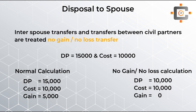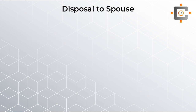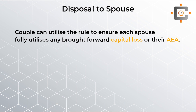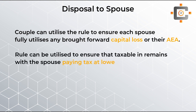Married couples can take tax advantage of this rule in various ways: they can transfer assets at no gain no loss between them, utilize any capital loss, utilize their annual exempt amount, or transfer assets with higher capital gains to the spouse paying the lower income tax or lower CGT rate.